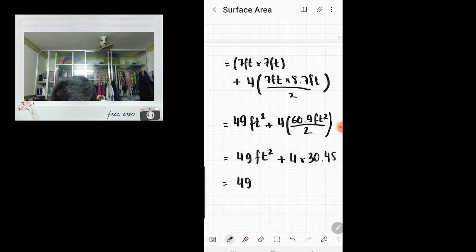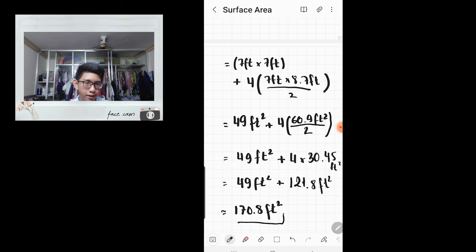Now 49 feet square plus 4 times 30.45 is 121.8 feet square. And now let's plus 49 with 121.8. So the answer would approximately be 170.8 feet square. So the surface area of this pyramid is 170.8 feet square.